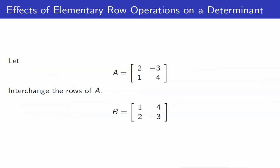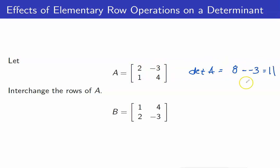Let us investigate by looking at this simple 2 by 2 matrix A. If we interchange the two rows of A, we get matrix B. The determinant of A is equal to 8 minus negative 3, so that is positive 11, whereas the determinant of B is equal to negative 3 minus 8, which is equal to negative 11.